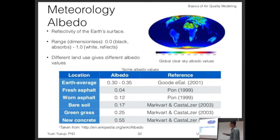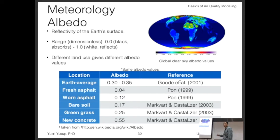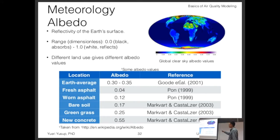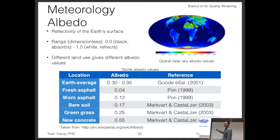Different land use gives different albedo values. The Earth average for the entire world is between 0.3 to 0.35. Very high albedo values occur at the north or south pole where the surface is mostly covered by white ice. Somewhere in the middle, albedo is quite low because the ocean is blue or green, so it absorbs more. Low albedo also occurs in the desert — sand is mostly white and reflects light back out.